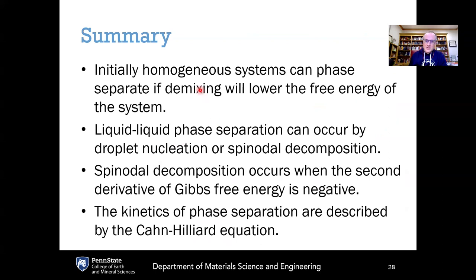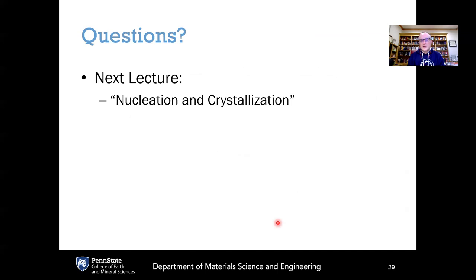To summarize: systems that are initially homogeneous can phase separate if demixing lowers the free energy. Liquid-liquid phase separation can occur by two mechanisms — droplet nucleation or spinodal decomposition — depending on whether the second derivative of the Gibbs free energy with respect to concentration is positive or negative. The kinetics of phase separation are described by the Cahn-Hilliard equation derived using variational calculus. Next time we will deal with nucleation and crystallization — how to nucleate and grow crystals. Thank you, everyone.